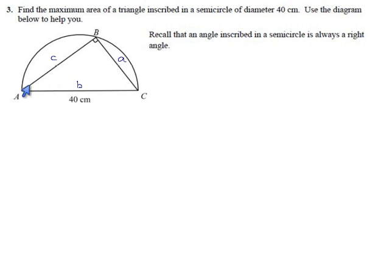No matter where this triangle is, as they point out here, if it's inscribed in a semicircle it will always be a right triangle, and if it's always a right triangle then the Pythagorean theorem always holds. That means we can say a squared plus c squared equals 40 squared, and 40 squared is 1600.